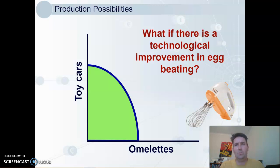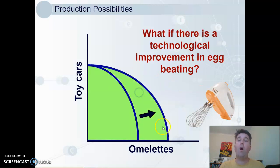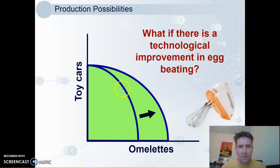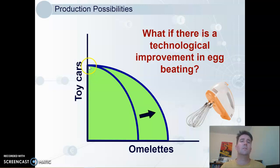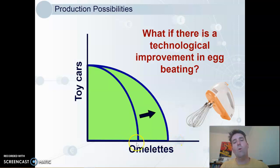What if there is a technological improvement in egg-beating? Some sort of electric egg-beating machine helps us make more omelettes, but it won't help us with toy cars at all. So the production possibilities curve will only increase on the omelette axis. This confuses some people at first — they think we can make more toy cars too. But on the Y-axis, where all possible resources are devoted to toy cars, we can't make any more. Whereas on the X-axis, when all resources are devoted to omelettes, we can make more than before.